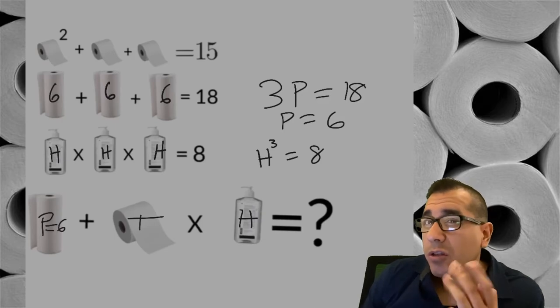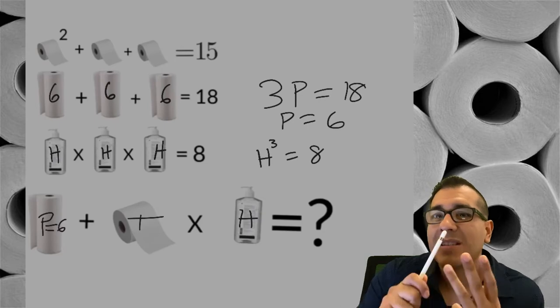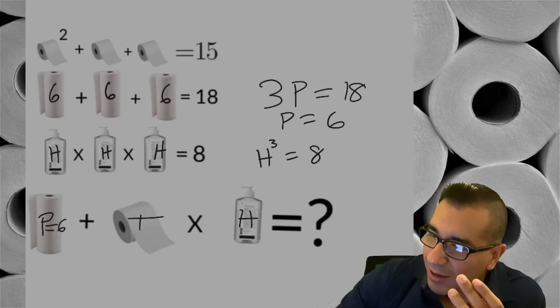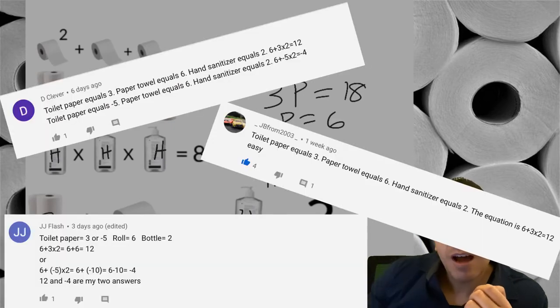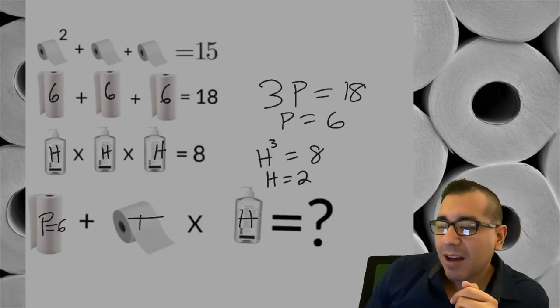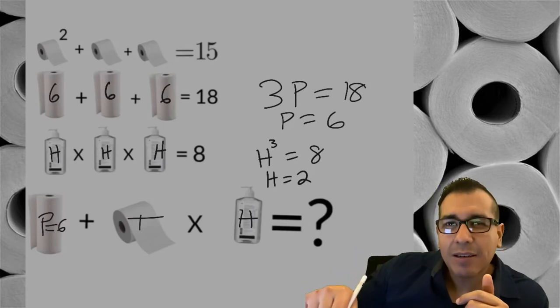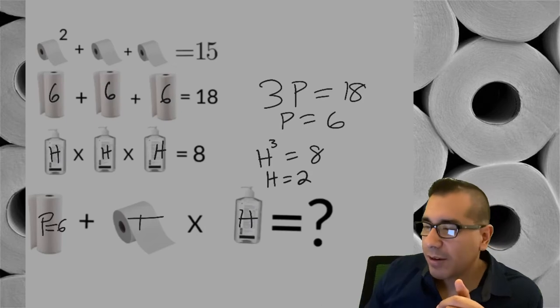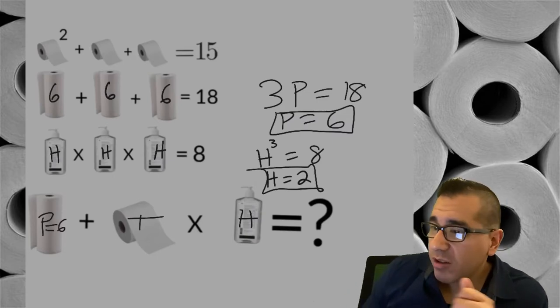So H equals two. But I want you guys to read the comments, right? Some people did some nice algebra to solve this. Check out the comments from the last video and maybe I'll show it at the end because I'm sure some people will want to see that. So paper towels equals six, the hand sanitizers equals two. Now, from the drum roll, now for the drum roll - toilet paper, the money maker.